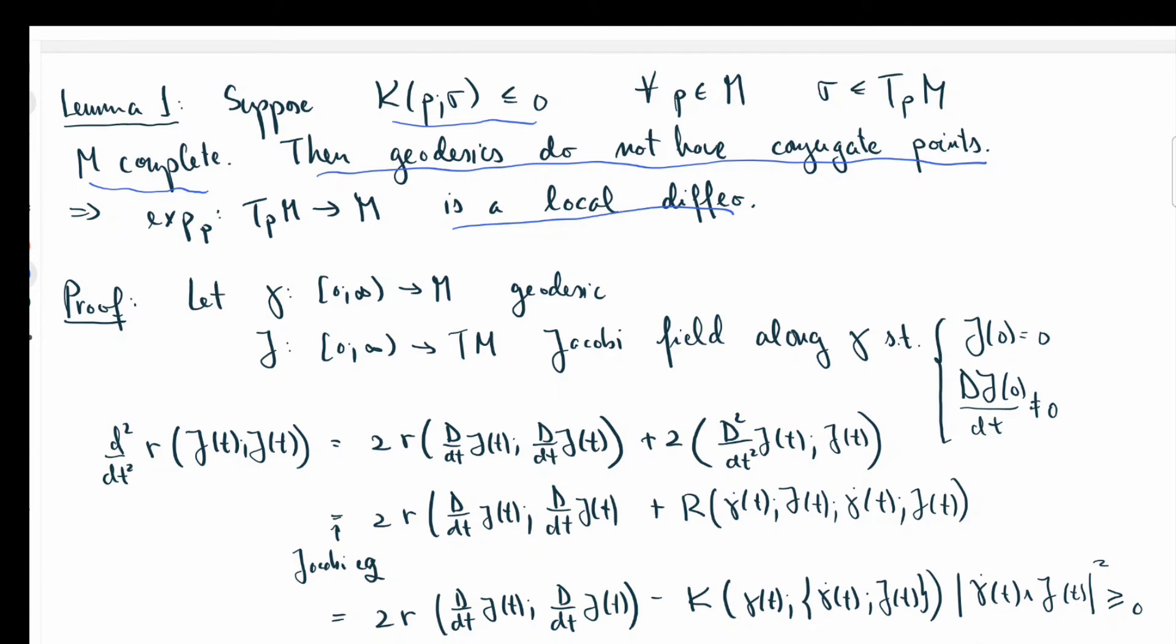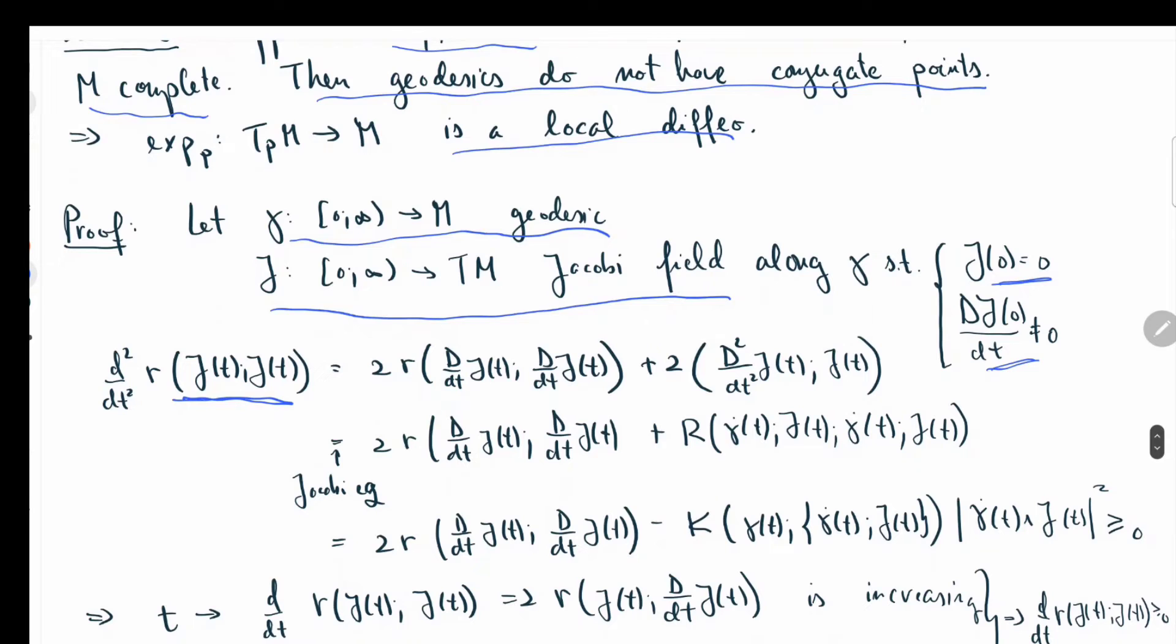We're in a complete manifold, so geodesics extend forever. Let's take a geodesic ray and a Jacobi field along this geodesic, such that the Jacobi field vanishes at 0, but it's not trivial, so its covariant derivative at 0 is non-vanishing. Let's take two derivatives of the length of the Jacobi field. If you take two derivatives, you apply the product rule twice, so you get this expression. Then the second covariant derivative of the Jacobi field shows up. For that term, you use the Jacobi equation, and you get this expression.